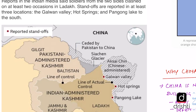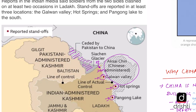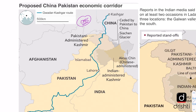The major standoff points are the Galwan Valley, Hot Spring, and Pangong Lake, along with the Daulat Beg Oldi forward post and Karakoram Pass. China is very interested in this region because it is building the China-Pakistan Economic Corridor (CPEC) running from Kashgar to Gwadar, which passes through illegally occupied Kashmir under Pakistan's occupation. When India claims the entire Jammu and Kashmir, China has concerns alongside Pakistan.